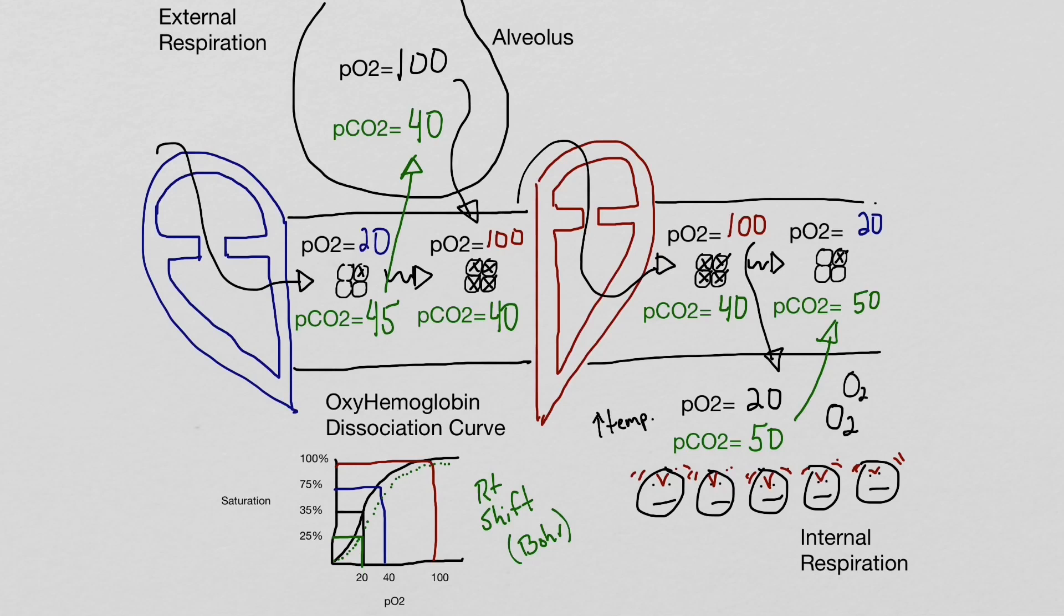So in this instance, three oxygens will be delivered per hemoglobin to the working cells. This has been a brief overview of external and internal respiration, and I hope it helps you. Thank you.